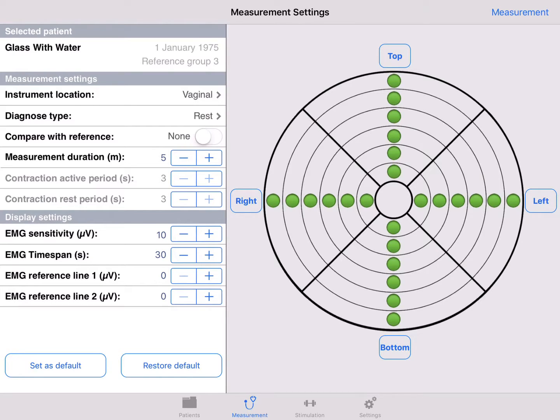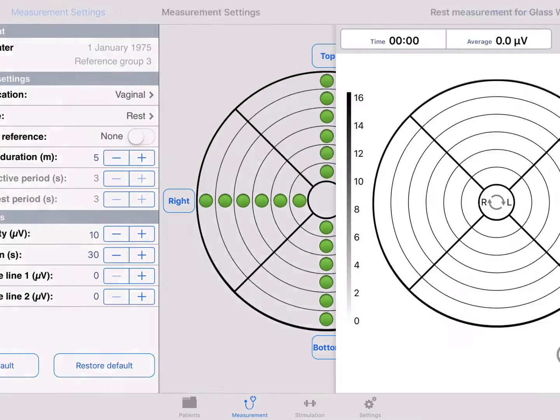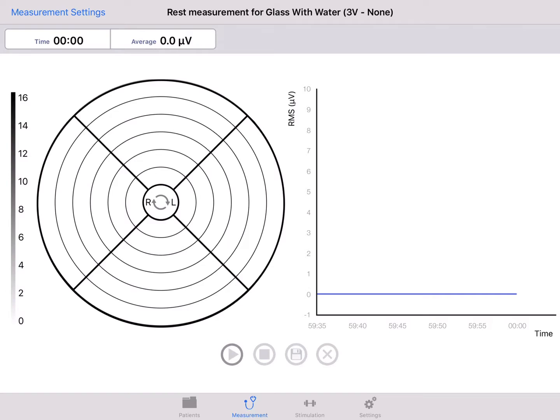Press measurement on the top right. You see the type of measurement, patient name, reference group, and comparison none or average on the top of the screen.